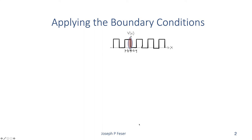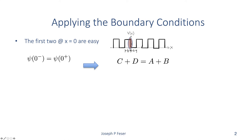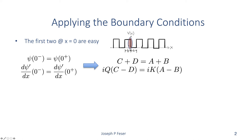The easy boundary condition to apply is at x = 0. We set the wave function on the left equal to the wave function on the right, giving us that c + d must equal a + b. Applying the derivative boundary condition, since the solutions are complex exponentials, taking the derivative brings down pre-factors: a factor of iq in one region and ik in the other. Those are our first two equations.